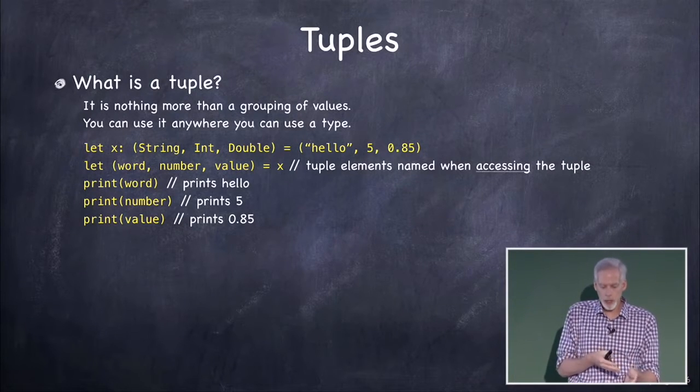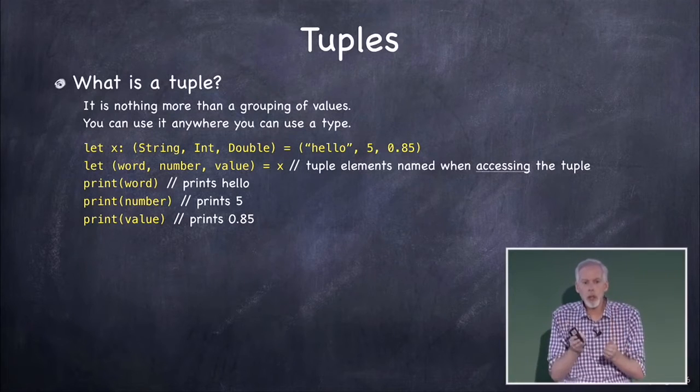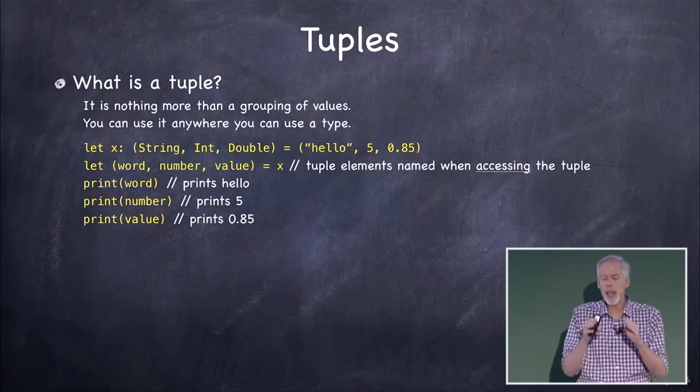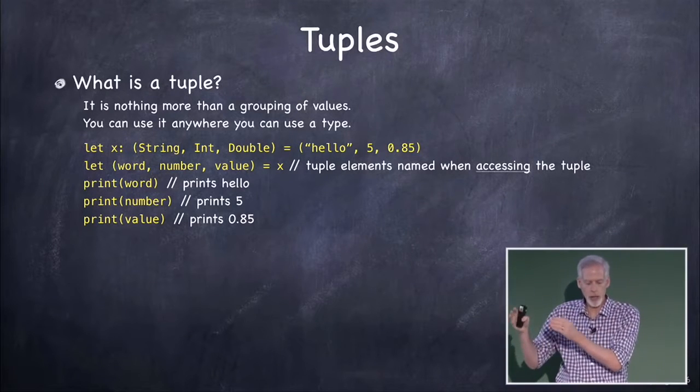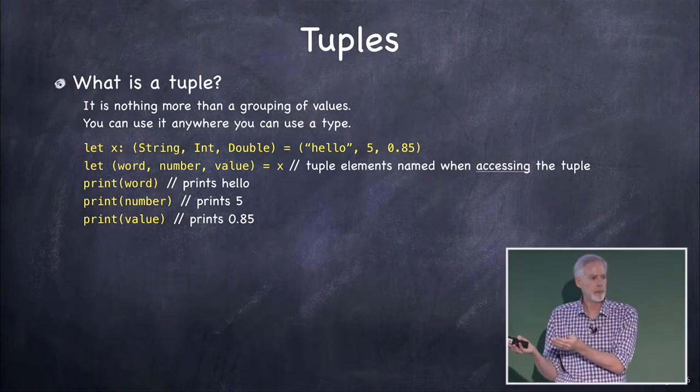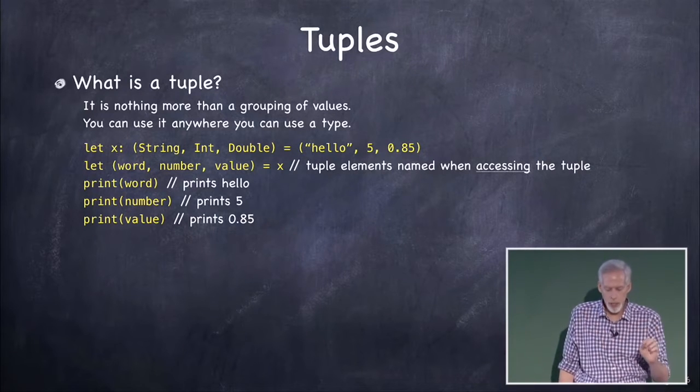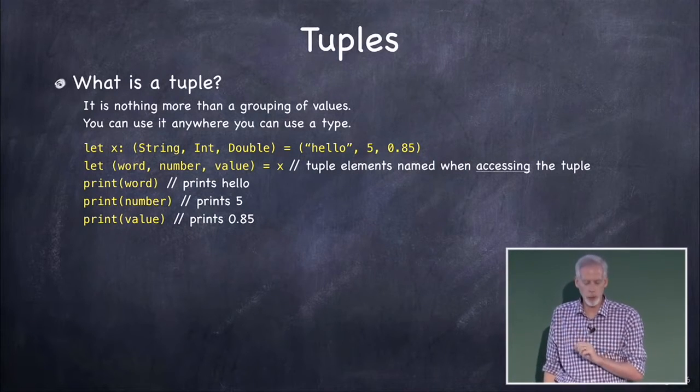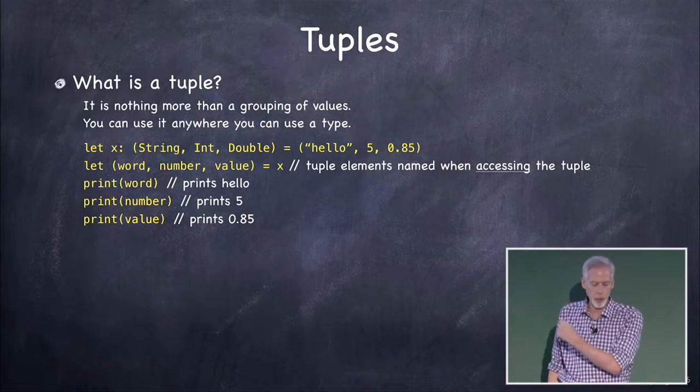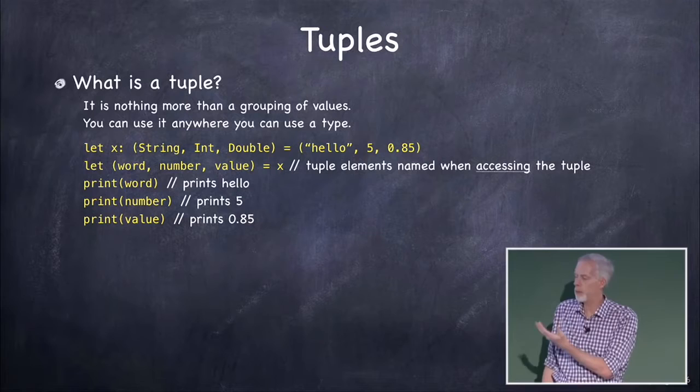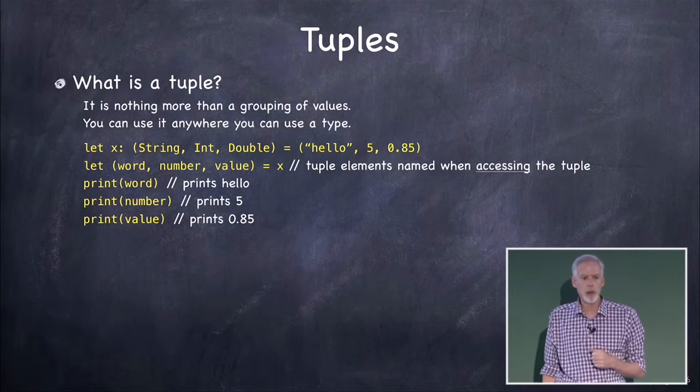Now, if you tried to say let word comma number, close parentheses, equal x, the compiler will complain. Because word comma number can't match a string, int, double tuple. So this particular syntax is just putting names on the things in the tuple so you can use them. So now you can print them out. Print word, print number, print value. Word would be of type string, number would be of type int, and value would be of type double.